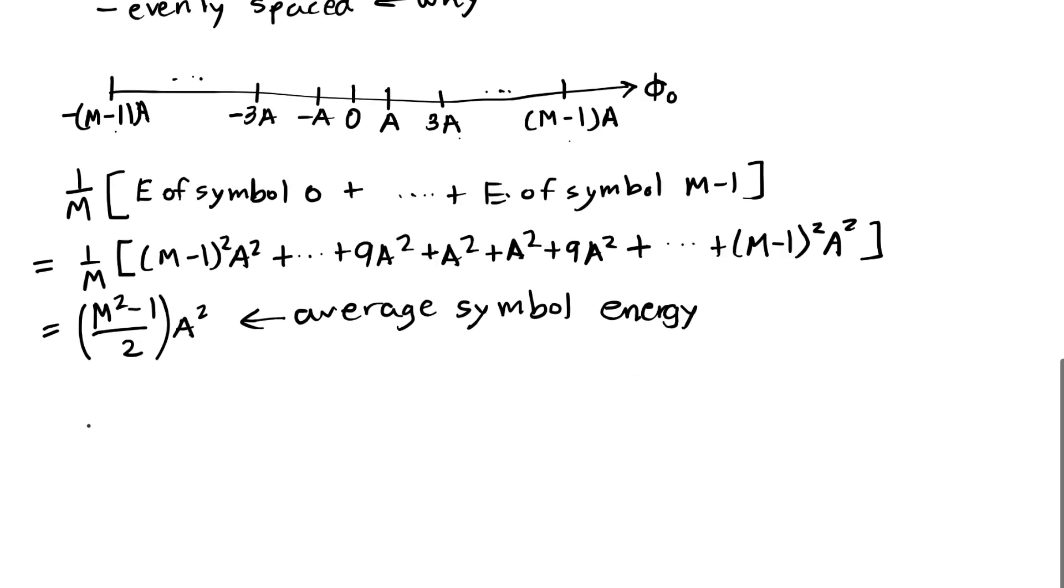What we're doing, just to make this more concrete, is we're sending one symbol at every time. And by every time, I mean all integer multiples of T sub s. Every delay of T sub s, we're going to send a new symbol. We're going to pick a new symbol to send based on what next bits need to be sent.